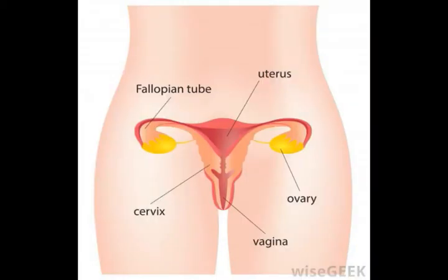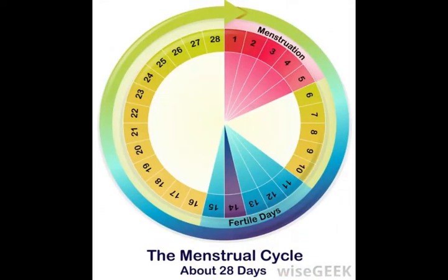On the 14th day, after the egg has matured, it is released from the follicle and travels to the fallopian tube. The left-behind follicle, called corpus luteum, continues to secrete small quantities of estrogen until the 28th day of the cycle, when the entire process starts over again after FSH renews its activity.